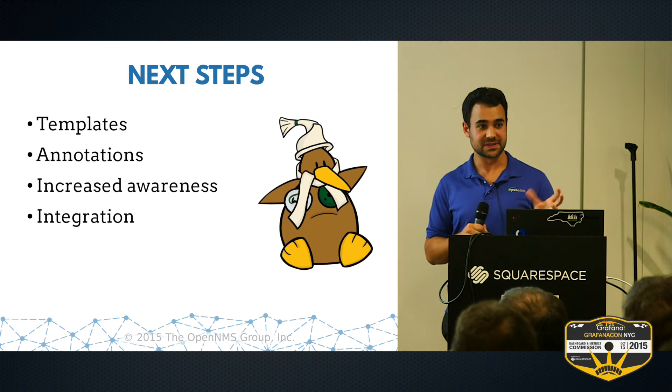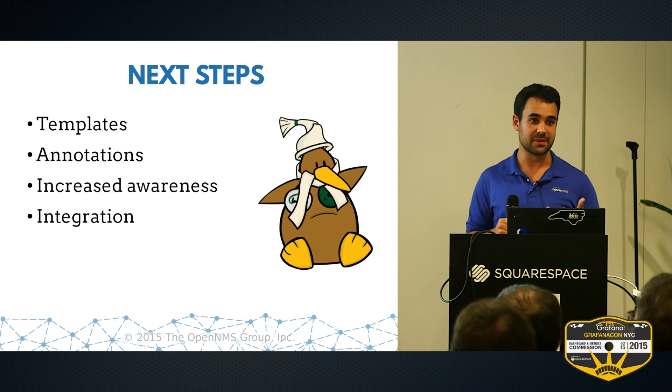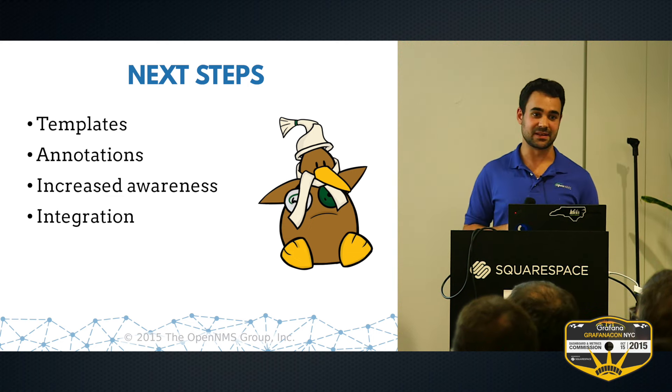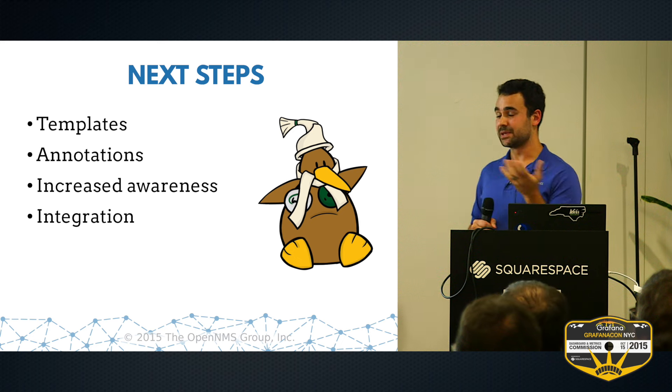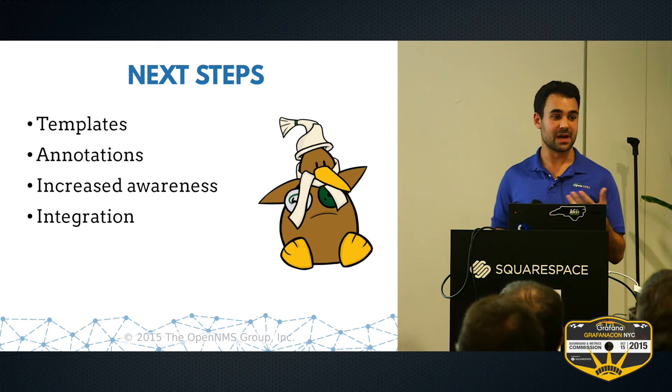That's the way the data source works today, but there's still some work to be done — in particular supporting metric queries. We don't have a full-fledged query language, so we need a way for users to find available metrics and add those to templates without using the modal dialogues. We also need support for annotations, and overall we need to increase awareness, since a lot of our user base isn't aware that Grafana integration is available. It would also help to integrate Grafana within our product so users don't need to install Grafana separately — ideally they'd open OpenNMS and get that directly.